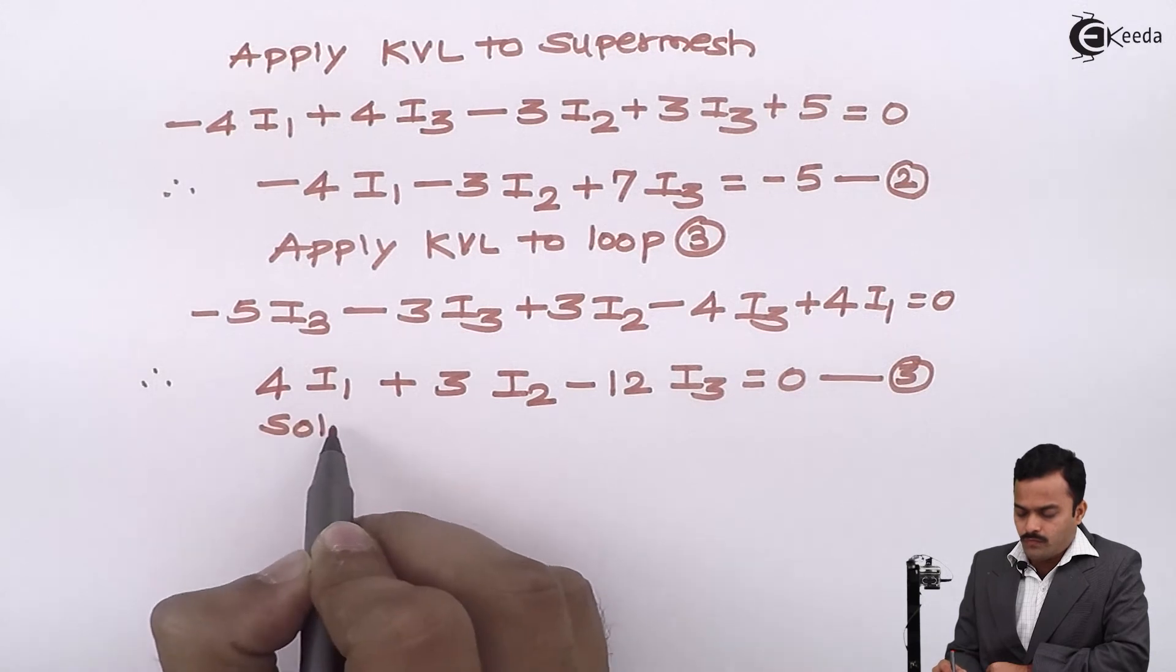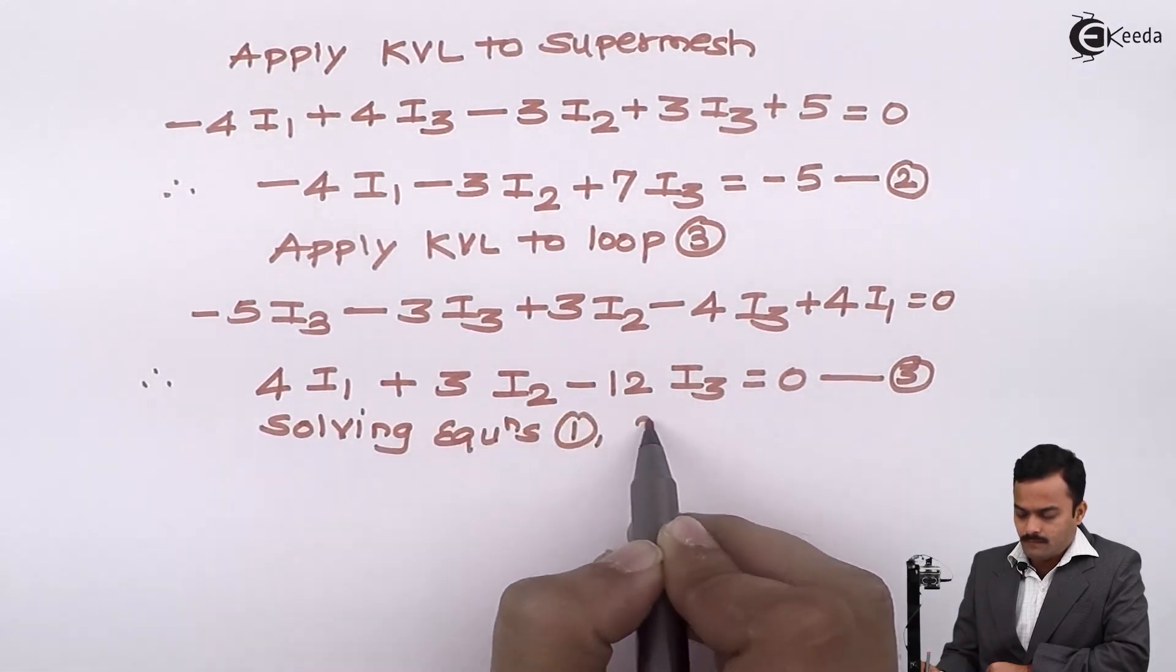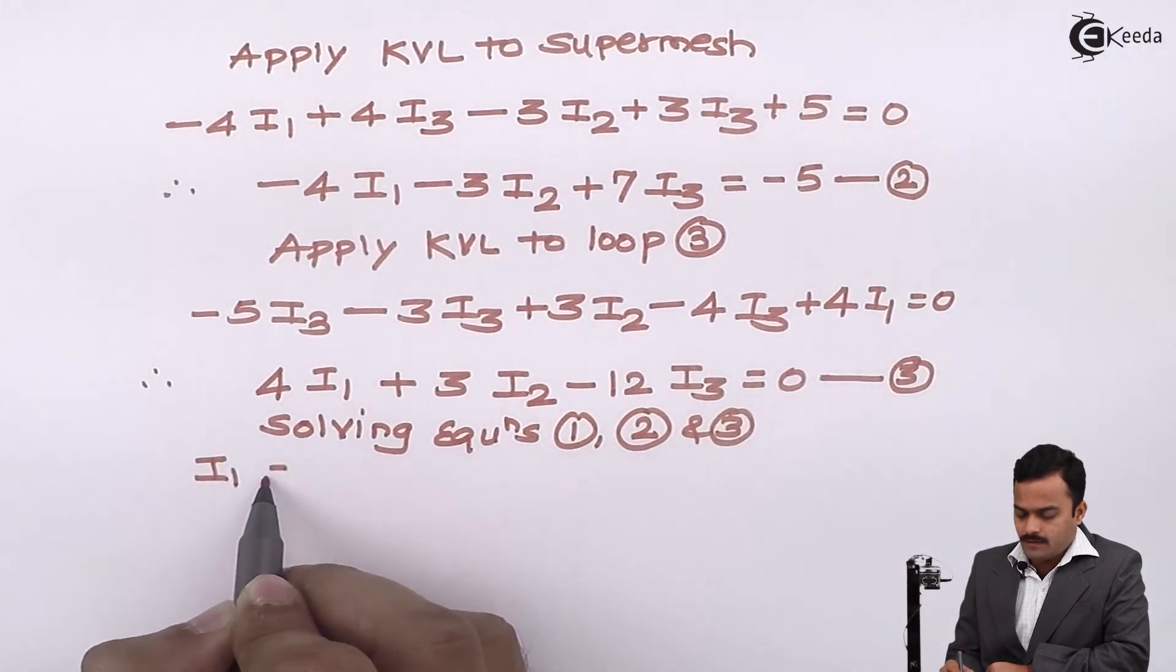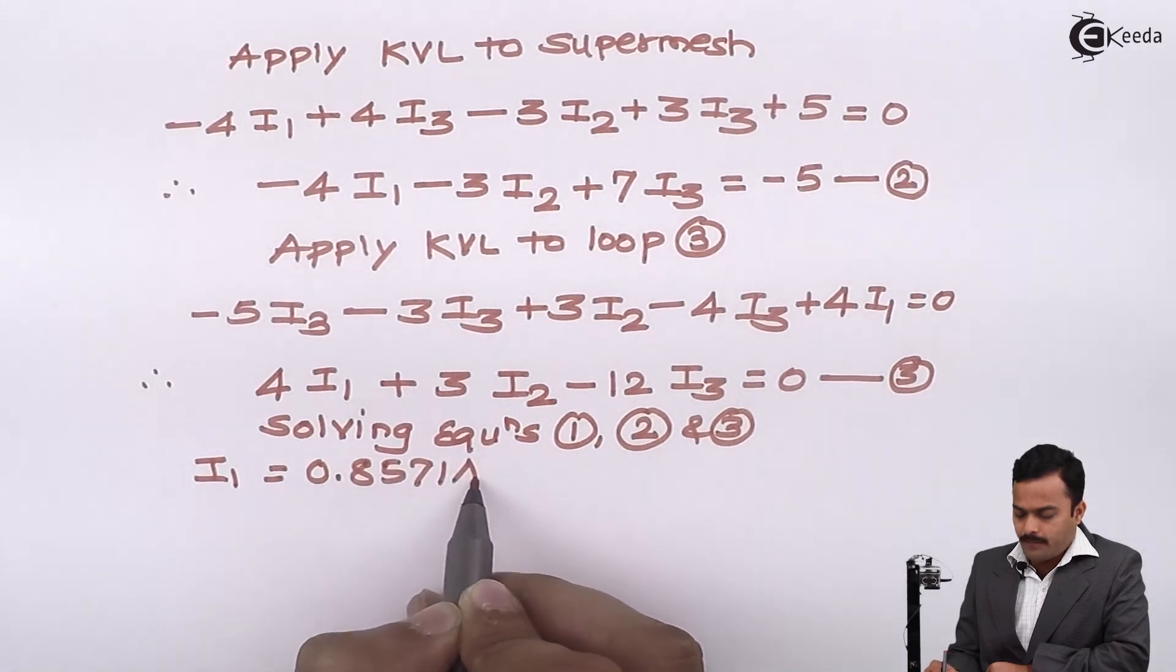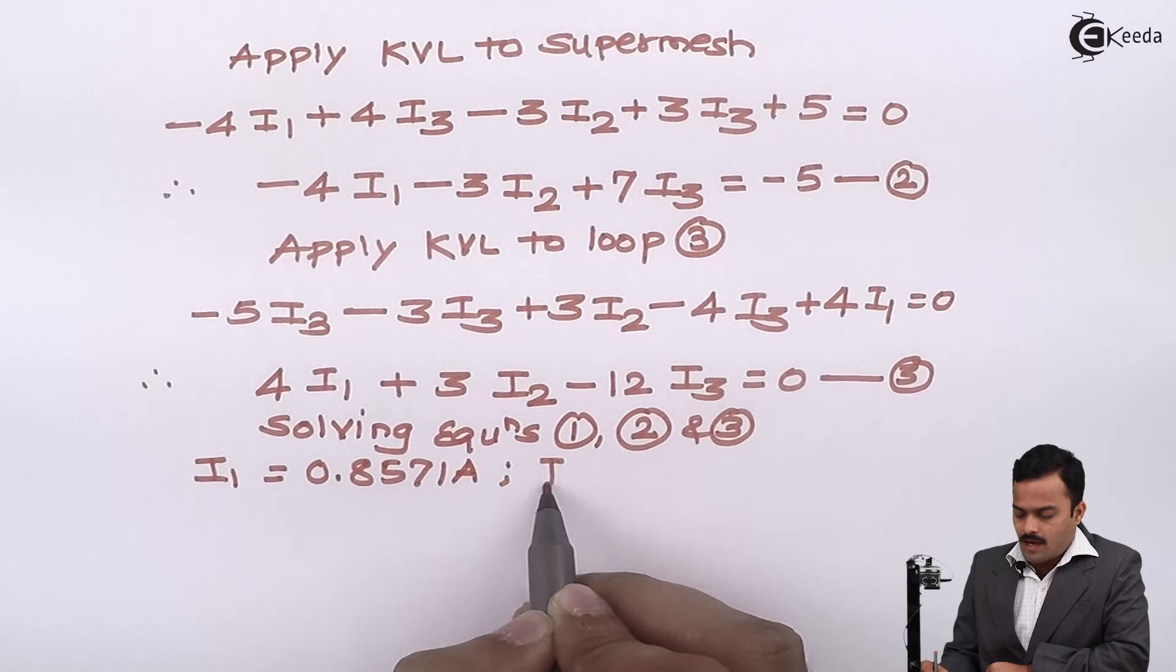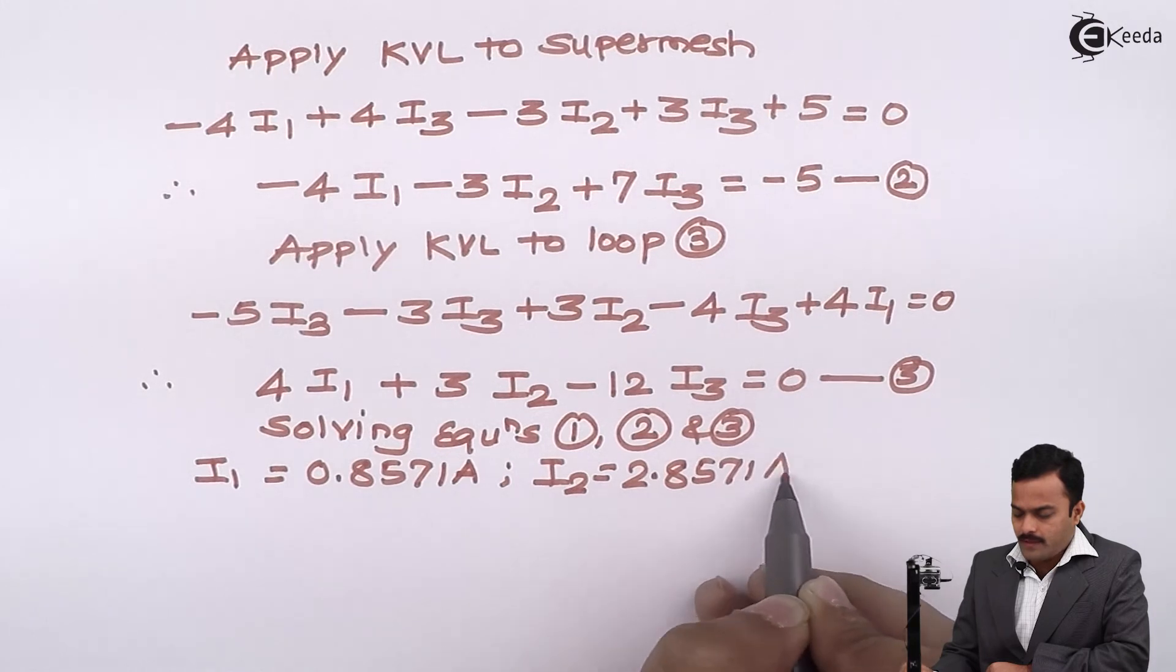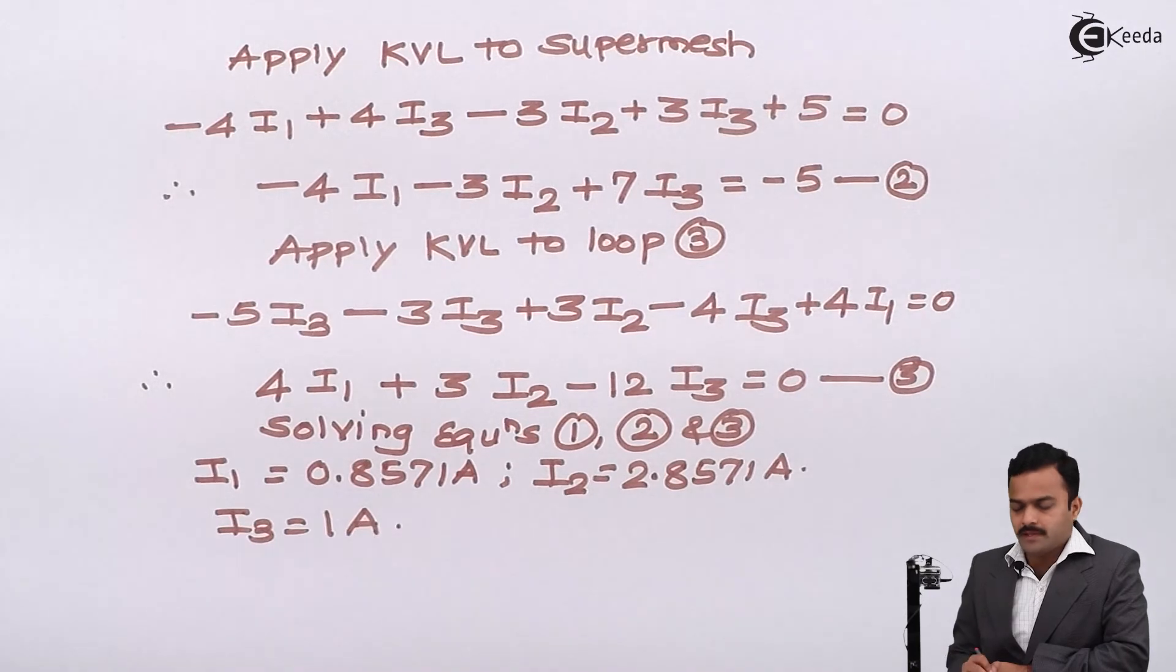Solving equation 1, 2, and 3, I will get I1 equal to 0.8571 ampere, and I3 I will get as 1 ampere.